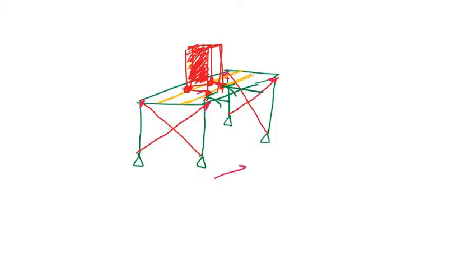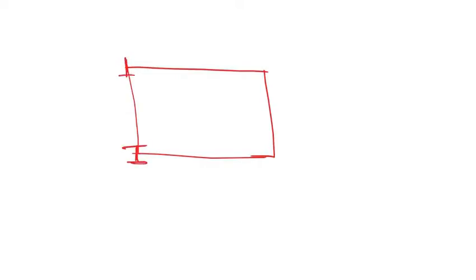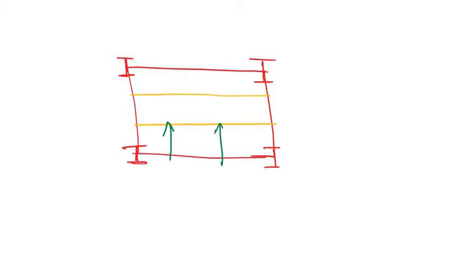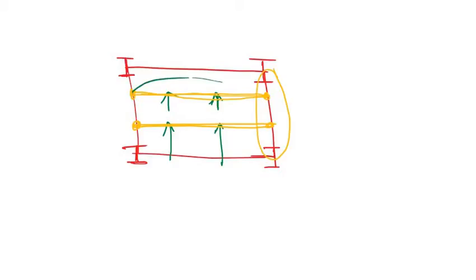Now let's cut out the plan view. In plan, we have four columns and the secondary beams. There is both lateral and vertical load at the four supports. These secondary beams are pin-connected at both ends, so due to the lateral load, the beam simply buckles like this.